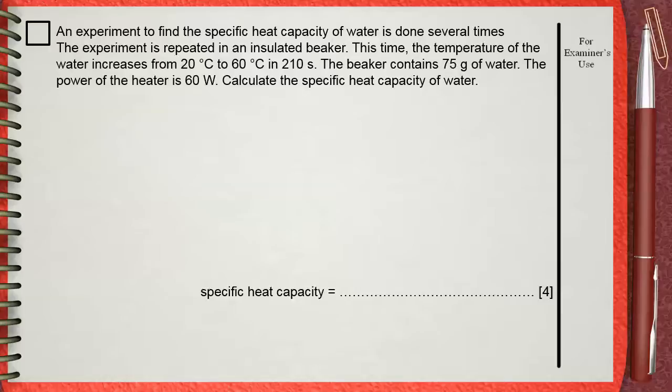Now we have the first given from 20 degrees Celsius to 60 degrees Celsius. This is the change in temperature and it has the symbol delta theta or delta T. This equals 60 minus 20, and this is 40. So the change in temperature in this question is 40 degrees Celsius.